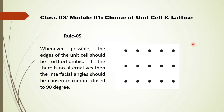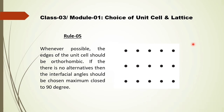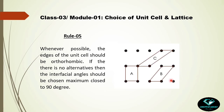Rule 5 states: whenever possible, the edges of the unit cell should be orthorhombic — meaning they should have interfacial angles of 90 degrees. If there are no alternatives, the interfacial angle should be as close to 90 degrees as possible. For a rectangular grid pattern with choices A, B, and C: choice A has all orthogonal edges at 90 degrees, B is a somewhat inclined parallelogram, and C is the most inclined. Choice A is the best as it satisfies Rule 5.